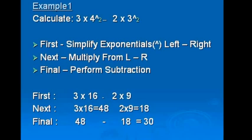In example 1, let's say we're calculating 3 times 4 to the exponent of 2, minus 2 times 3 to the exponent of 2. First, we simplify the exponentials from left to right. Next, we multiply from left to right, and finally we perform a subtraction. So in this case, it would be 3 times 16 minus 2 times 9. Next, 3 times 16 is 48, and 2 times 9 is 18. The final answer would be 48 minus 18, which gives us 30.